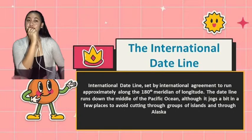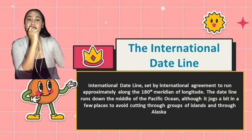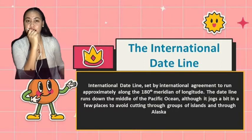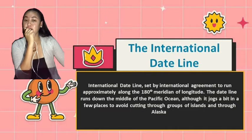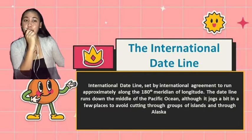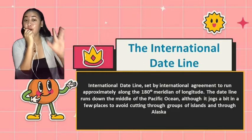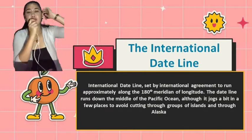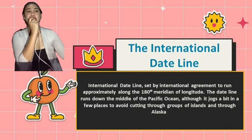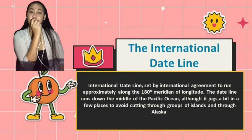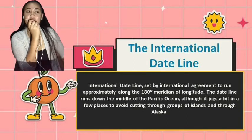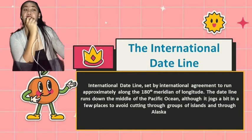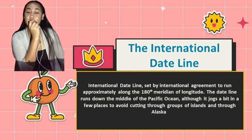Lastly, we have the international dateline. The international dateline is set by international agreement to run approximately along the 180-degree meridian of longitude. The dateline runs down the middle of the Pacific Ocean, although it jogs in a few places to avoid cutting through groups of islands and through Alaska. The international dateline is an imaginary line running along Earth's surface from the North Pole to the South Pole in the middle of the Pacific Ocean. When you cross it, you either gain or lose a day depending on which direction you are traveling.